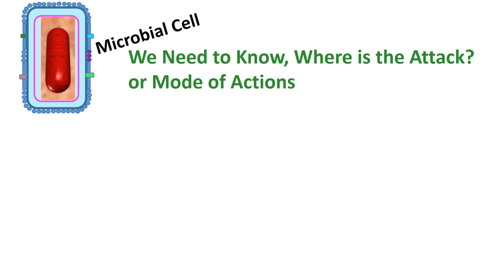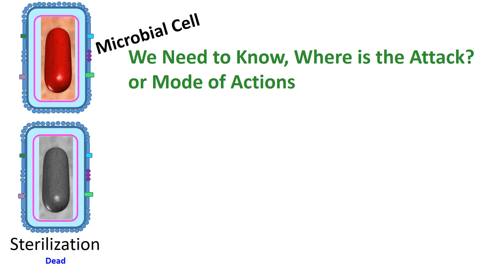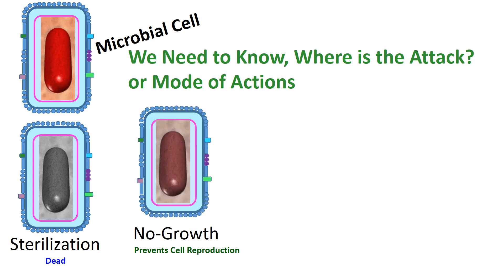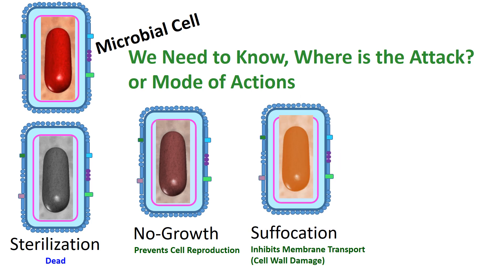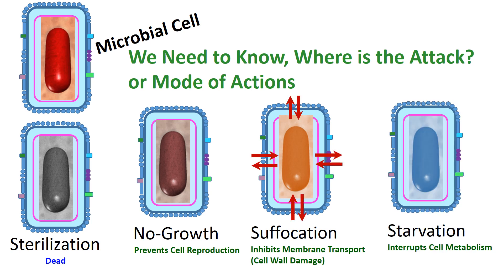Stress could affect the cell in four ways. First, at extreme stress, the cell could be dead — that is, we achieved sterilization. Second, the cell could be at the lag phase, meaning no growth; stress prevents cell reproduction. Third, the cell could be in suffocation — stress inhibits membrane transport due to cell wall damage. Fourth, the cell could be in starvation.